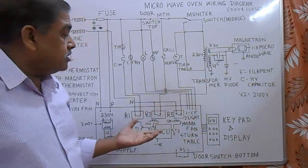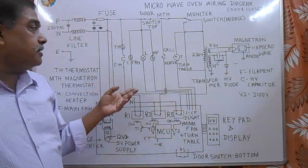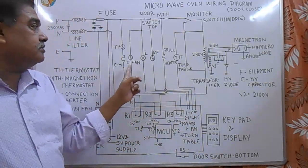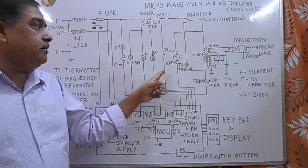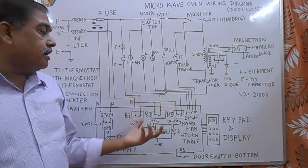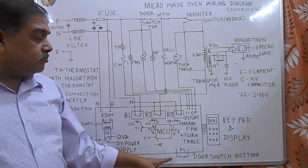Third is magnetron cooling fan and fourth one is turntable. So all the seven units, means three heating units plus four items: this convection fan, light, main fan, and turntable, are controlled by main PCB. So this is the heart.